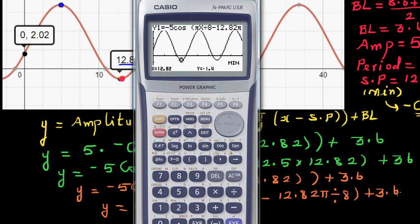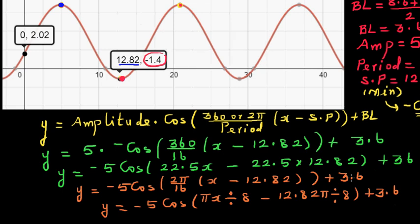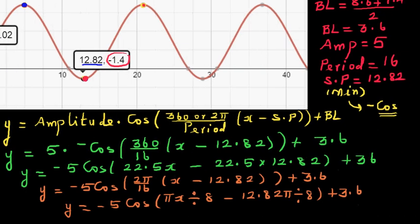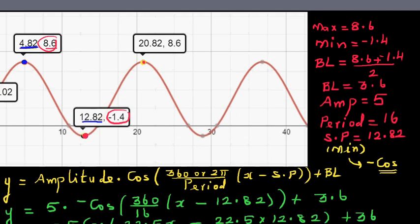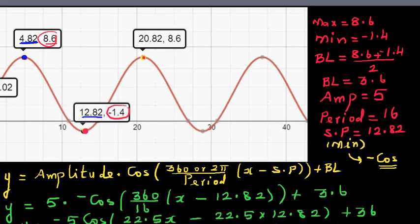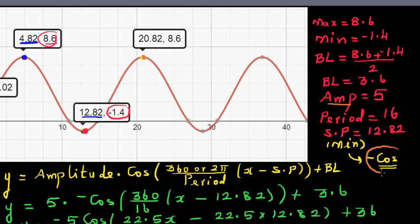So this is how you can write the equation of any sine or cosine graph using this basic information. To find the equation, you need the maximum and minimum — that gives you the baseline and amplitude. From the x-coordinates of the maximum and minimum, you get half the cycle; multiply by 2 for the full period. Your final decision is about where you're starting: if starting at minimum, it's negative cosine; if starting at maximum, it's positive cosine.